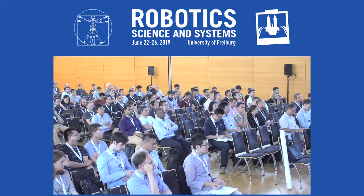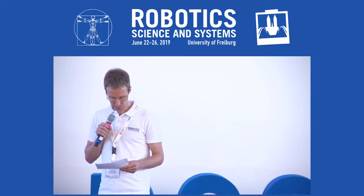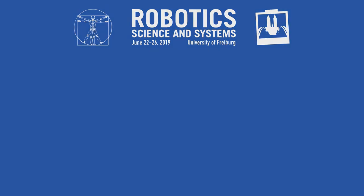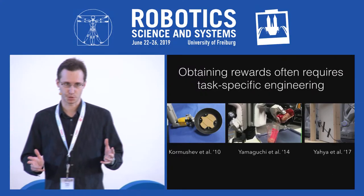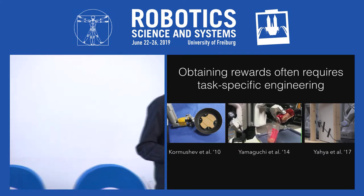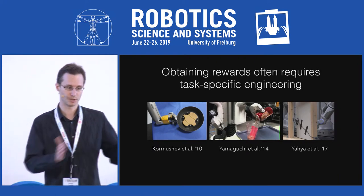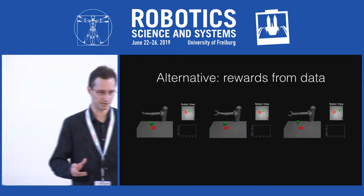The final talk is 'End-to-End Robotic Reinforcement Learning without Reward Engineering' by Abhishek Singh, Larry Yang, Josephine, and Sergey Levine. Deep RL can learn complicated robotic tasks directly from image observations, but in practice you need to specify a reward function — which means instrumenting your environment with sensors on objects or building entire computer vision systems just to evaluate whether the robot is succeeding. Perhaps we can use data to learn a reward function for deep RL instead.